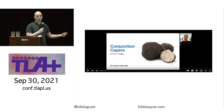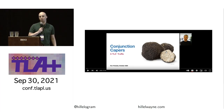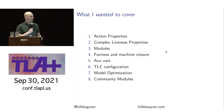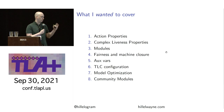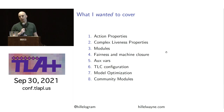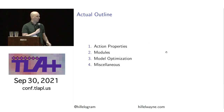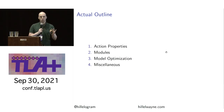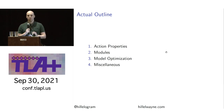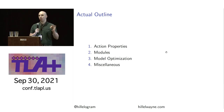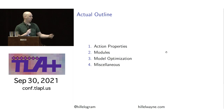Because you already took TLA+ Truffles, I had to choose a different dessert — so I went with tiramisu. There are a lot of topics I wanted to cover: action properties, liveness, modules, fairness, auxiliary variables, TLC model optimization. But I only have 40 minutes, so I narrowed the list to four things: action properties, the module system, how to optimize your model checking so it doesn't run for two hours on a notebook, and if we have time, miscellaneous topics.